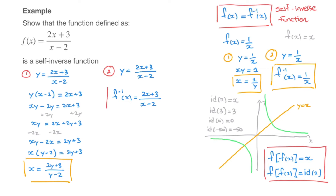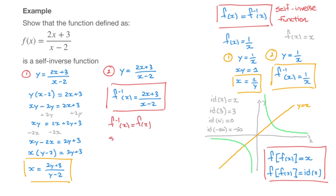We've just found this function's inverse. Looking at this and comparing it to the function we started off with, we can see right away that inverse of f is equal to f of x. This tells us that we're dealing with a self-inverse function.